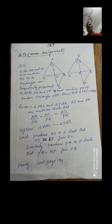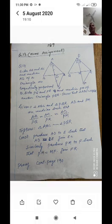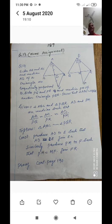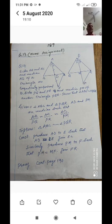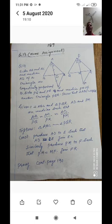Produce AD to E such that AD = DE, and join EC. Similarly in triangle PQR, we produce PM to F such that PM = MF, and join FR. This is the construction. Mark angles 1 and 2 at angle A, and angles 3 and 4 at angle P — check the figure.